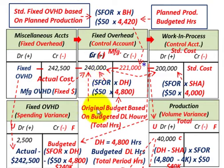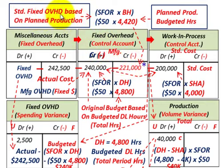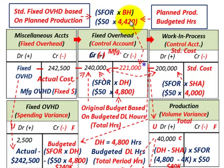We take our standard fixed overhead rate of $50 times the denominator hours — total budgeted direct labor hours of 4,800 — giving us $240,000 in the fixed overhead control account. For standard fixed overhead based on planned production, we take $50 times the budgeted hours planned for the period of 4,420 hours, giving us $221,000.